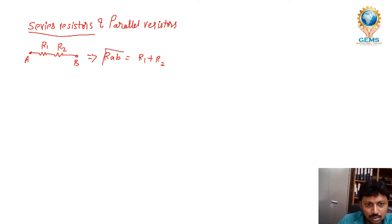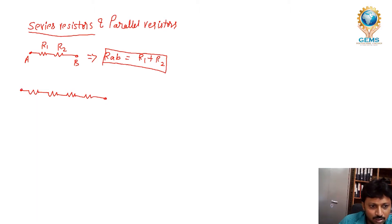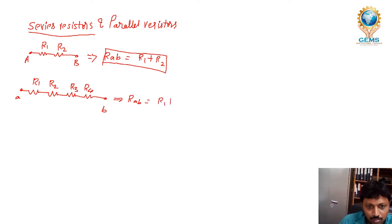If there are three resistors or more than three resistors connected, we can simply add them. For example, if four resistors are connected — this is A, this is B, and this is R1, R2, R3, and R4 — then RAB is equal to R1 plus R2 plus R3 plus R4. This is how we find the total resistance.